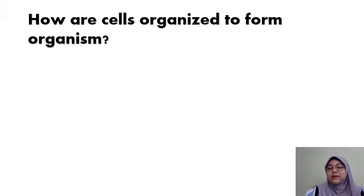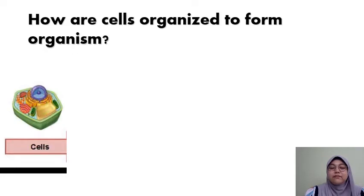So how do cells get organized to form an organism? There are several levels to this. The first level would be the cellular level. We have unicellular organisms and multicellular organisms. Unicellular organisms like amoebas and bacteria, they can carry out all the activities necessary for life and its survival all by itself.